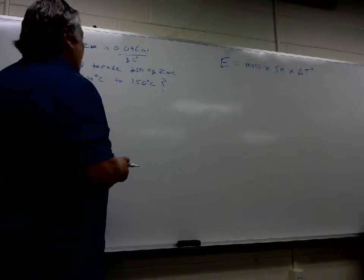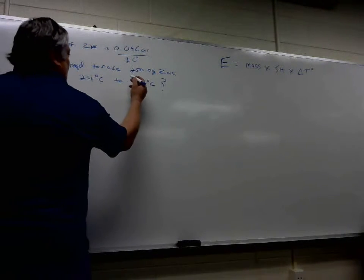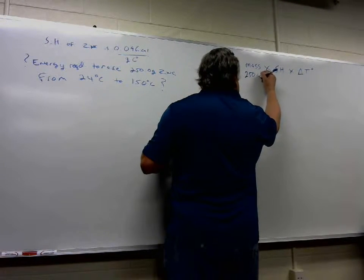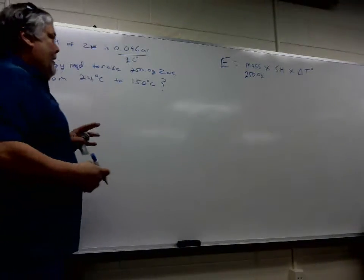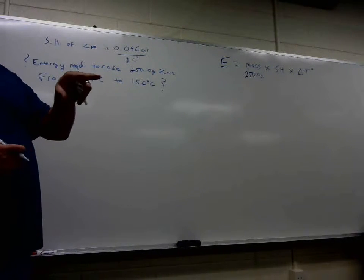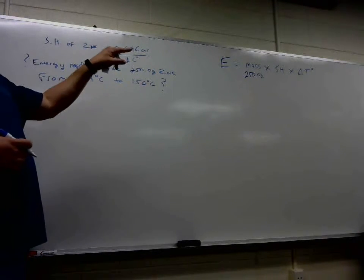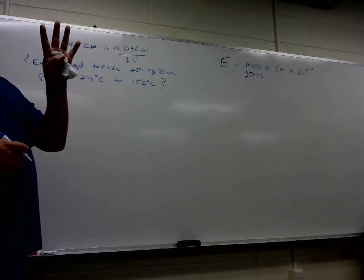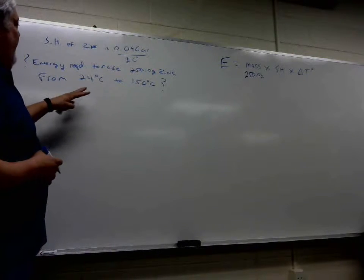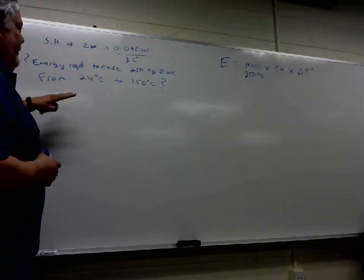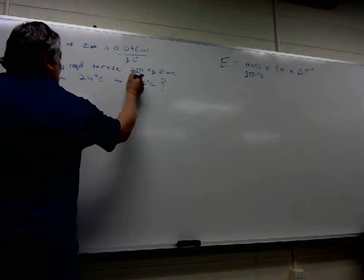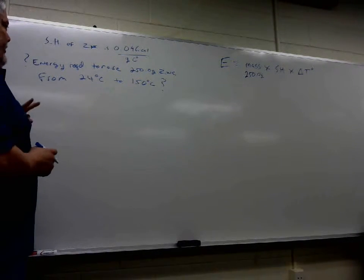So let's start plugging in what we know. The mass of the object is given to us in the problem, right? 250.0 grams of zinc. Remember that 250.0 is important because Mr. Williams is specifying four significant figures. A little bit of confusion on the sig figs from professor to professor, so let's not worry about that right now.